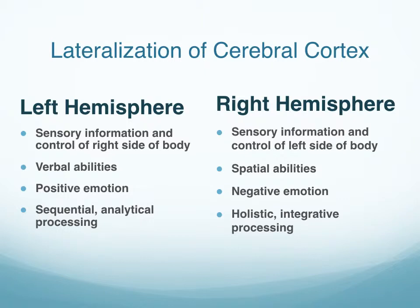Beyond these specific regions, we also have hemispheric lateralization of the cerebral cortex. Our brain is divided into two hemispheres, and each hemisphere has associated specific functions. The left hemisphere is responsible for sensory information and control of the right side of the body, language and verbal abilities, and positive emotion. In the right hemisphere, you have control of the left side of the body, spatial abilities, and negative emotion.